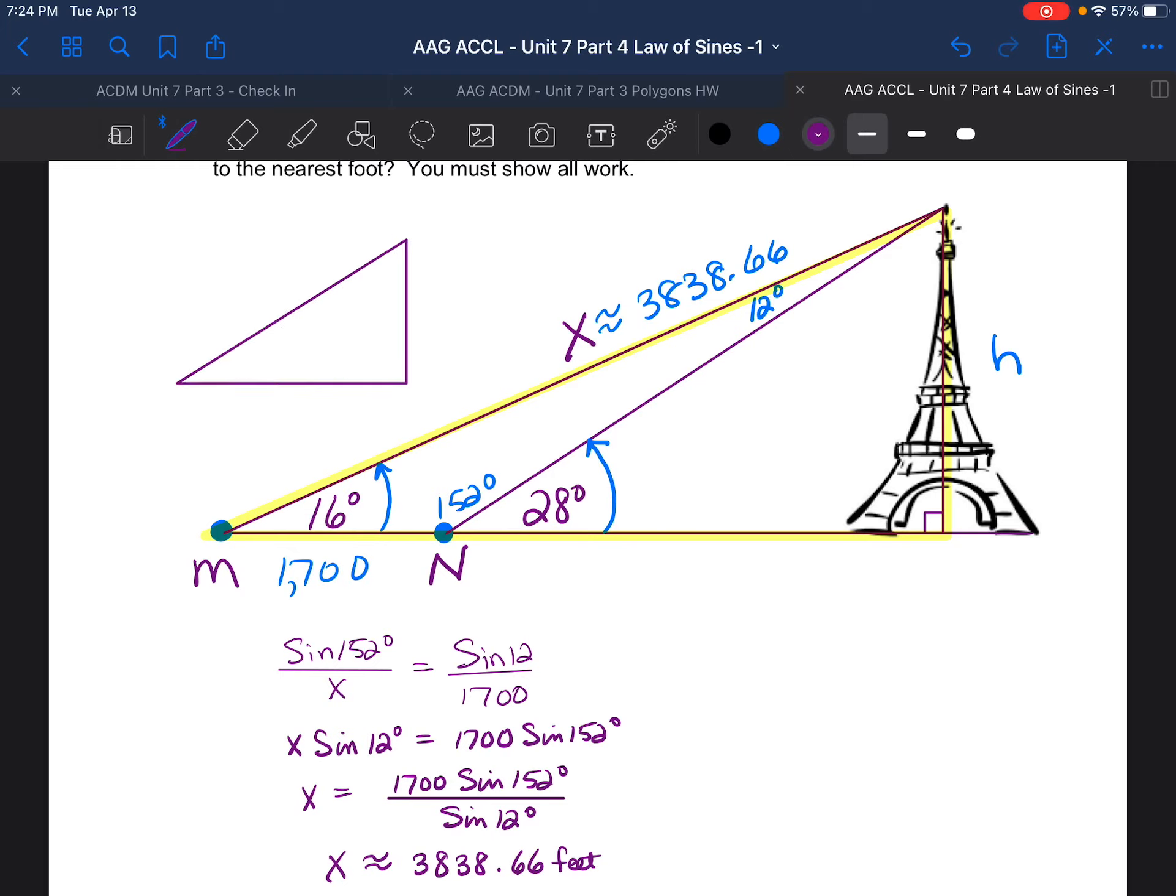So here's what we're kind of given. Where we have H, we have 16 degrees, it's the outermost triangle, it's a right triangle, and now we also know that this is 3838.66. Okay, so I'm going to have opposite, and I'm going to have hypotenuse. So this is going to be a sine equation, should be pretty straightforward, and it should give us our final answer. So I'm going to have the sine of 16 degrees equals H over 3838.66.